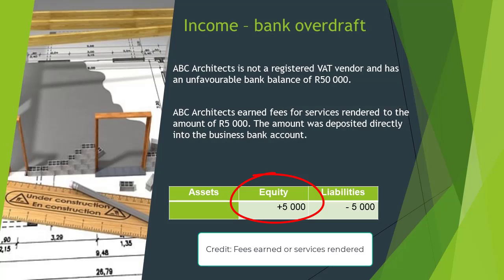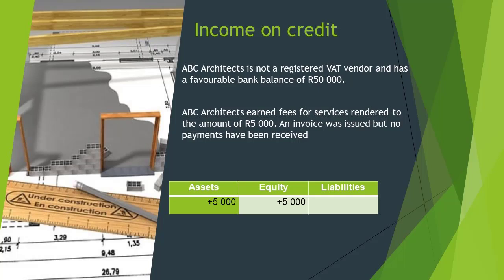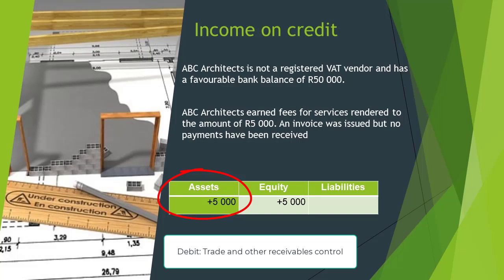The fees for services rendered will still increase equity with a plus 5,000 Rand since the income account will be credited. If we change the example once more — this time to state that an invoice was issued but no payment has been received — this means that ABC Architects delivered the services and invoiced the client, but the client has not yet paid. The client still owes money to ABC Architects, so we will debit the asset account named Trade and Other Receivables Control, as the money owed by the client increases this asset account because we will collect the money from the client in future.